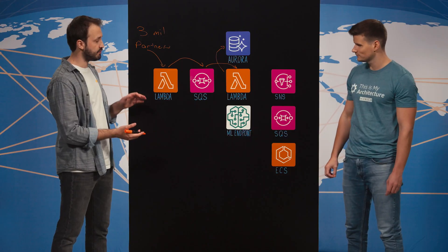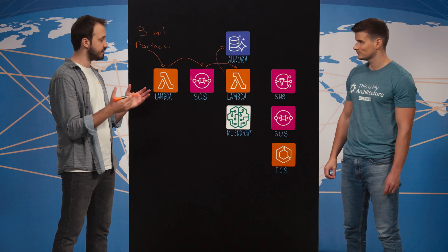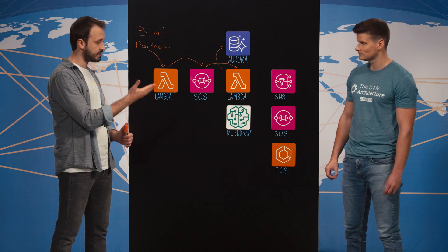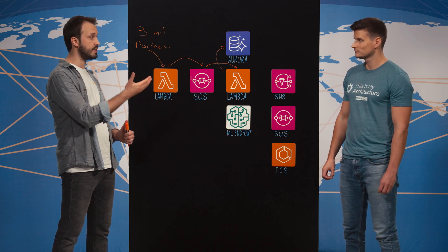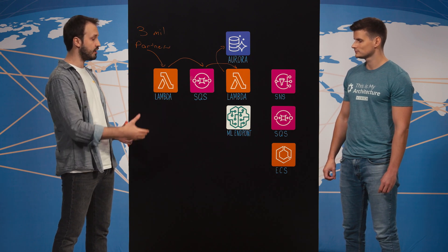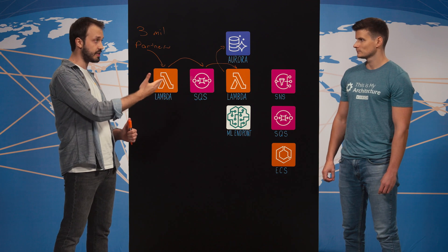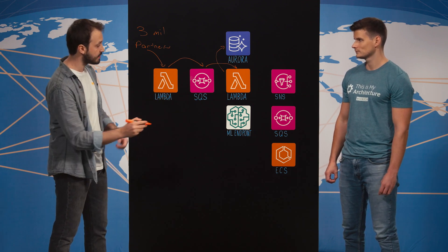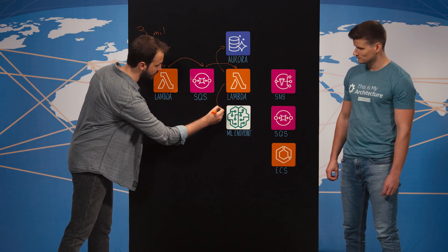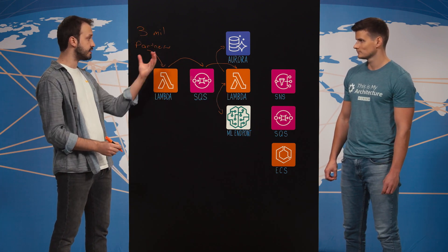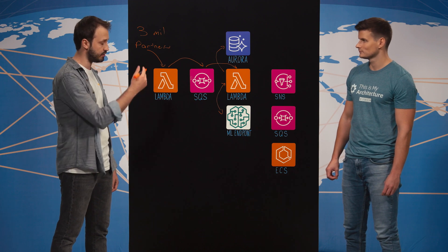I also see a machine learning component here at the bottom — can you walk me through what that exactly does? Sometimes we receive lean data from partners. To enrich and categorize that data we use machine learning models that we created with SageMaker, and we also use natural language processing in those models. After that we communicate with the Lambda that we use for processing and storing the enriched data inside our database.